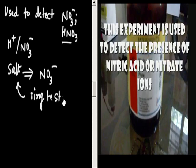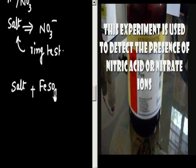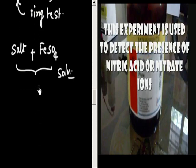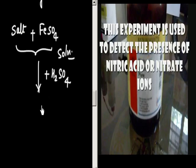So we can perform the ring test. What we do: we take the salt and add freshly prepared FeSO4. So now we have a solution of salt plus FeSO4. Then we slowly pour H2SO4 from the side. Finally, a brown complex is formed.